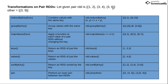mapValues applies a function to each value of a pair RDD without changing the key. ra.mapValues with x to x plus 1 increments all values by 1. So for key 1, value 2 becomes 3; for key 3, value 4 becomes 5 giving 3 comma 5; and value 6 becomes 7 giving 3 comma 7.